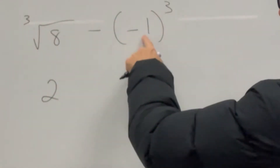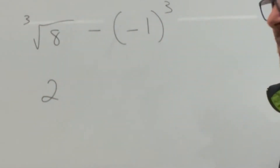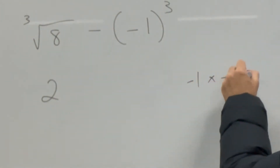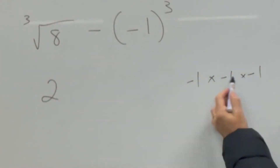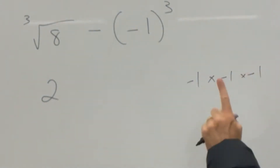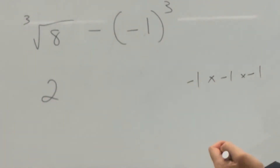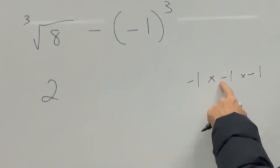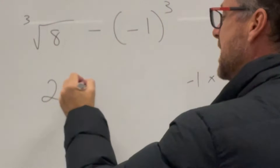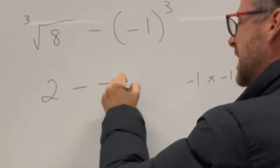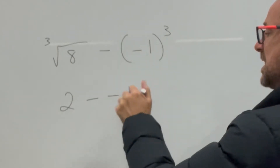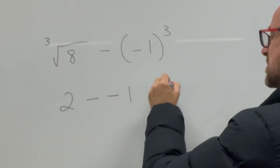Negative 1 cubed is negative 1 times negative 1 times negative 1. So 1 times 1 times 1 is obviously 1, and you just have to decide whether it's negative or positive. A negative times a negative is a positive, times a negative is a negative. So it becomes take away 1. That subtraction becomes a negative, so that becomes 2 plus 2 plus 1.